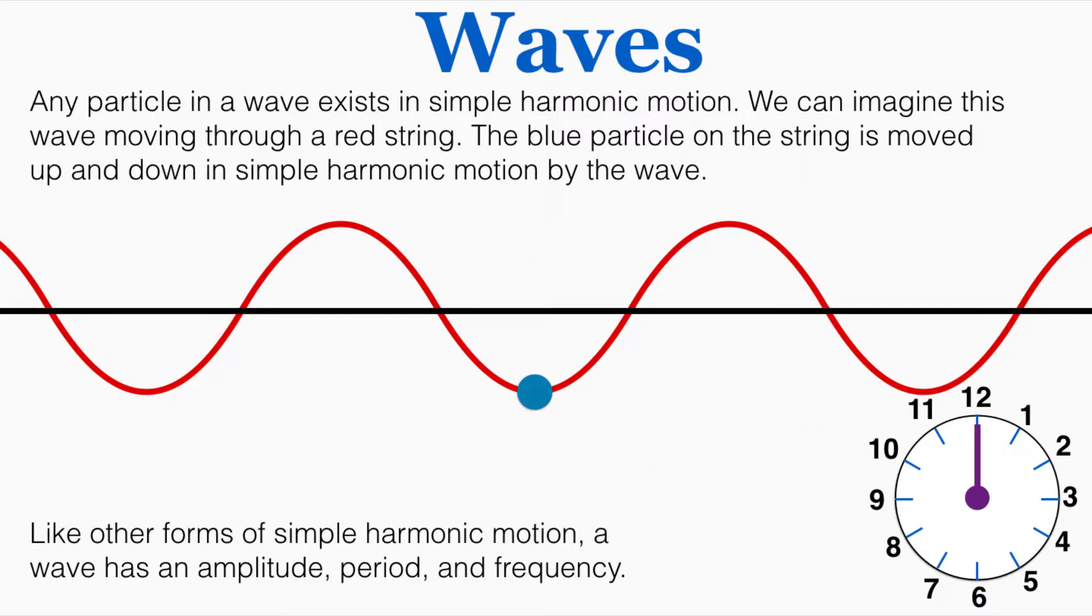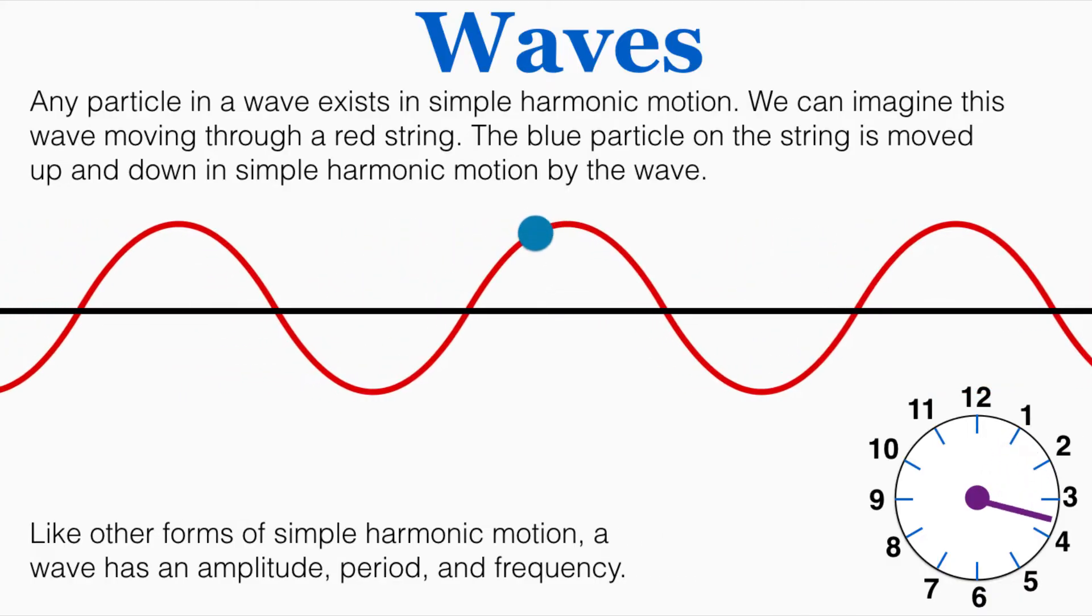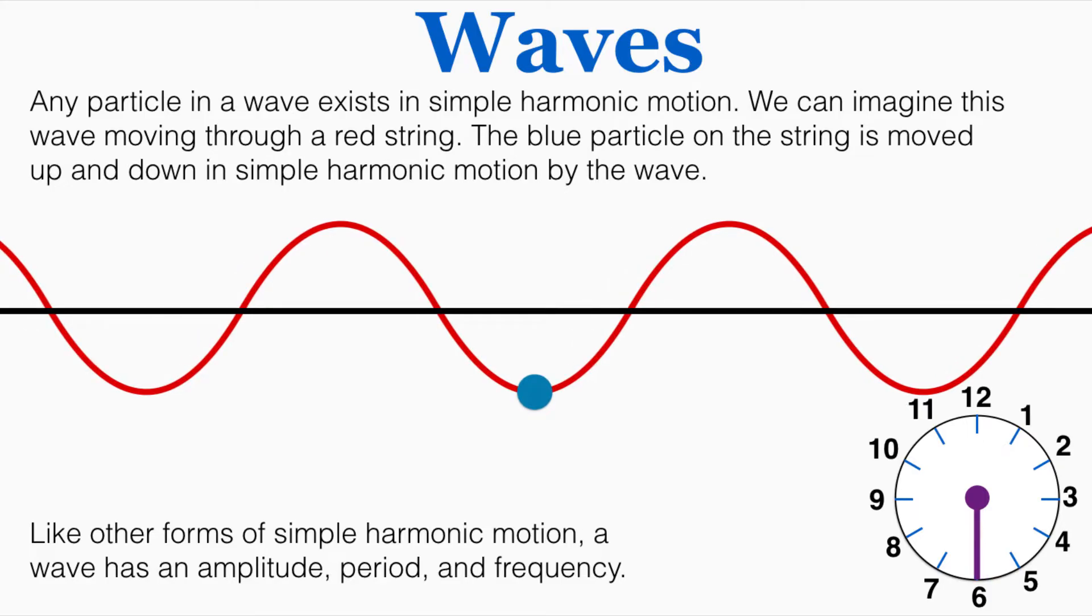Waves can also have a period and frequency. Just a reminder that a period is the amount of time it takes something to complete one complete cycle. If I start this clock and observe how long it takes this particle to complete one full oscillation, I can see that it took six seconds. So that means the period of this wave is six seconds.